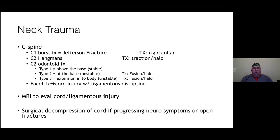Other common associations include basilar skull fracture identified by Battle's sign and raccoon eyes, with associated facial nerve injury at the geniculate ganglion. Coagulopathy associated with brain injuries is due to increased tissue factor release. For C2 odontoid fractures: type one is stable (above the base), type two is at the base and unstable (requires fusion and halo), type three extends into the body and is also unstable. Facet fractures should raise concern for cord injury with ligamentous disruption — get an MRI. Surgical decompression is required for progressing neurological symptoms or open fractures.